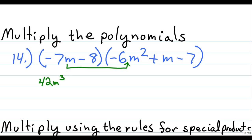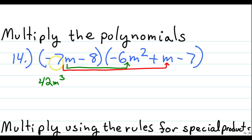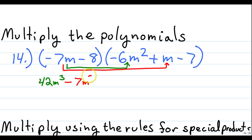Next, we're going to distribute this negative 7m to the second term. We have negative 7 times 1, which gives us negative 7, or minus 7. An m times an m gives us m to the second power.